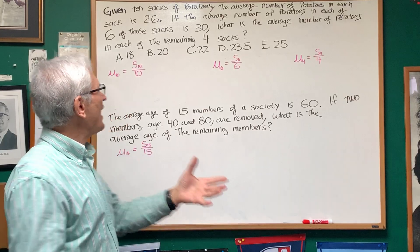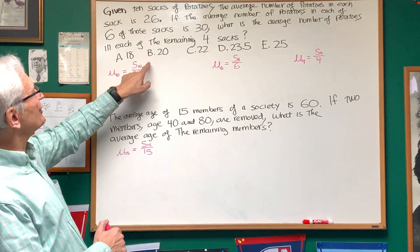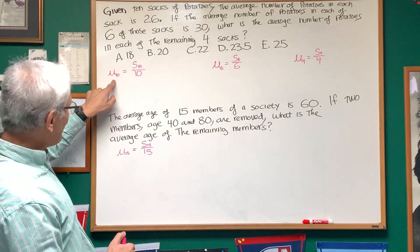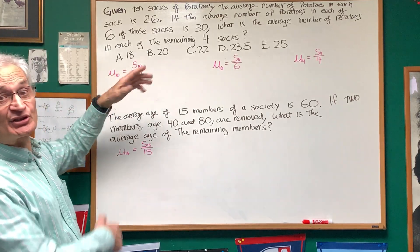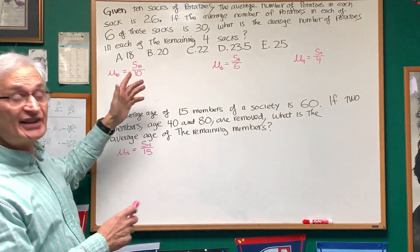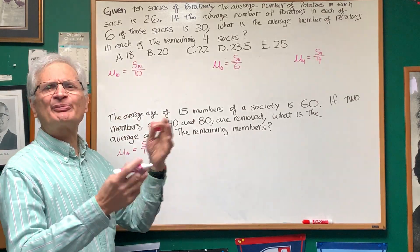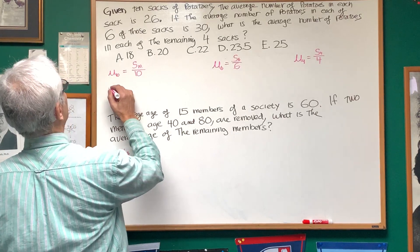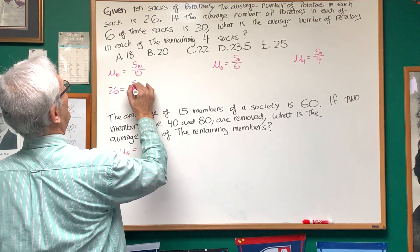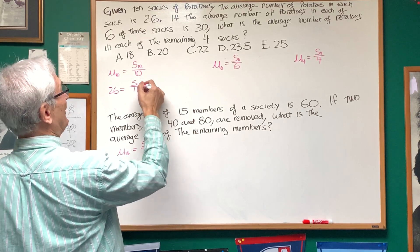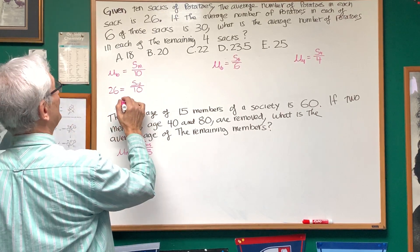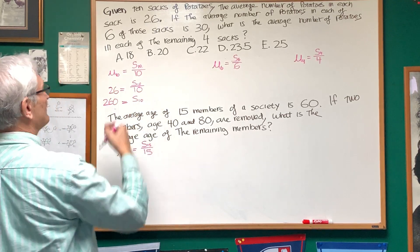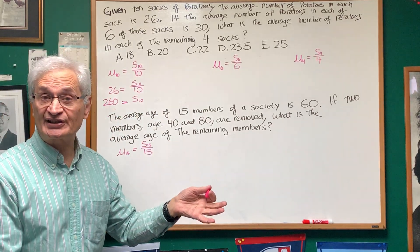In this problem, we have to realize what average is. Average is the sum of all the scores divided by the number of scores. So the average number of potatoes in each sack is the sum of the potatoes in all the sacks divided by 10. Let's find out what the total number of potatoes is. We know that the average is 26, and the sum divided by 10 equals 26. Therefore, the number of potatoes in all 10 sacks is 10 times 26, which is 260.